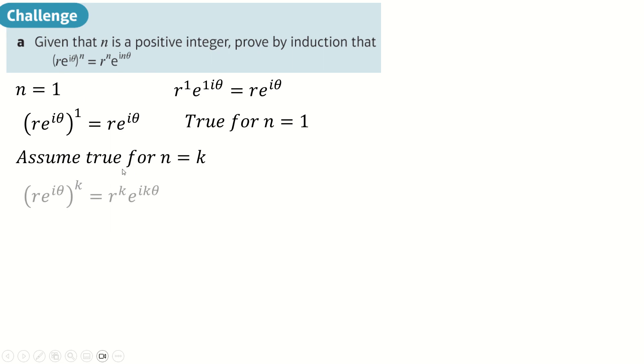And then we're going to assume it's true for n equals k. So this is the thing that we can assume to be true. And then we'll just investigate k plus one, in which you can write this as re^(iθ) times k times another lot of re^(iθ). Of course, this by the assumption step is just equal to this here.